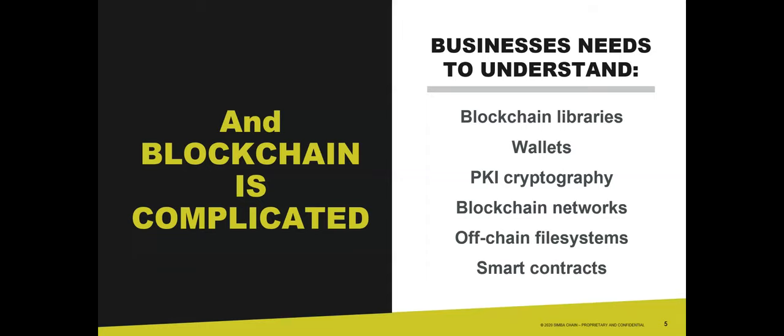Blockchain is complicated. A business needs to understand libraries, wallets, cryptography, the networks themselves — there's so much focus on the network — and off-chaining of file systems, which is particularly important for smart contract-based implementations. And of course, smart contracts themselves. Even this is just a snapshot of what you need to understand. So you have a lot of moving parts, a discipline prone to hyper-specialization, and coordinating across those moving parts is really key to success — especially for production applications in the real world, not just isolated POCs.